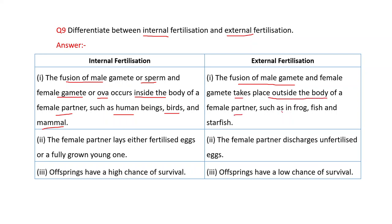In internal fertilization, the female partner lays either a fertilized egg or a fully grown young one, while in external fertilization, the female partner discharges unfertilized eggs. In internal fertilization, offspring have a high chance of survival, while in external fertilization, offspring have a low chance of survival.